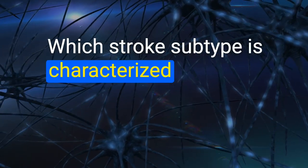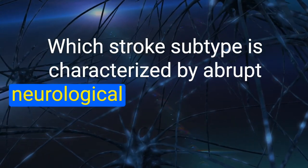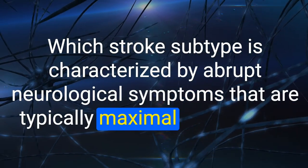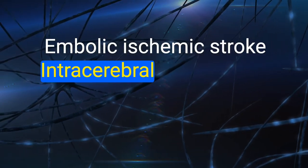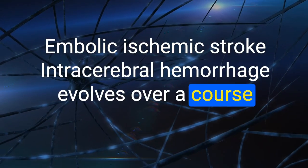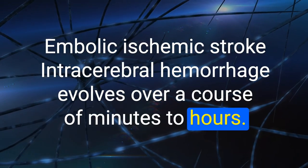66. Which stroke subtype is characterized by abrupt neurological symptoms that are typically maximal at the start? Embolic ischemic stroke. Intracerebral hemorrhage evolves over a course of minutes to hours.